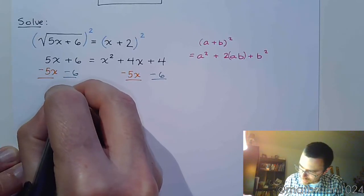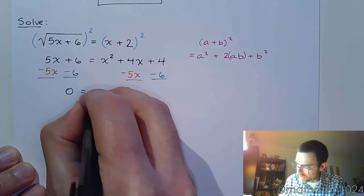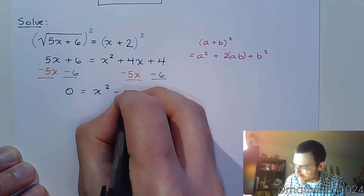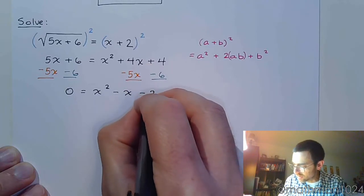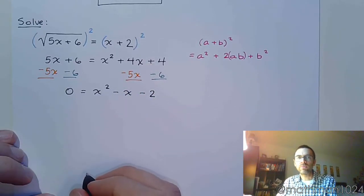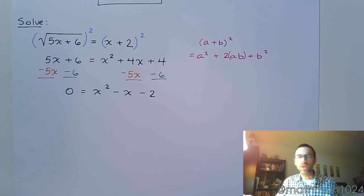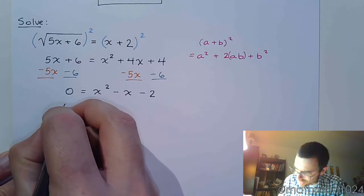And now, we have this. 0 equals x squared minus x minus 2. So it's a nice polynomial, nice trinomial. So it should be fairly easy to factor this.